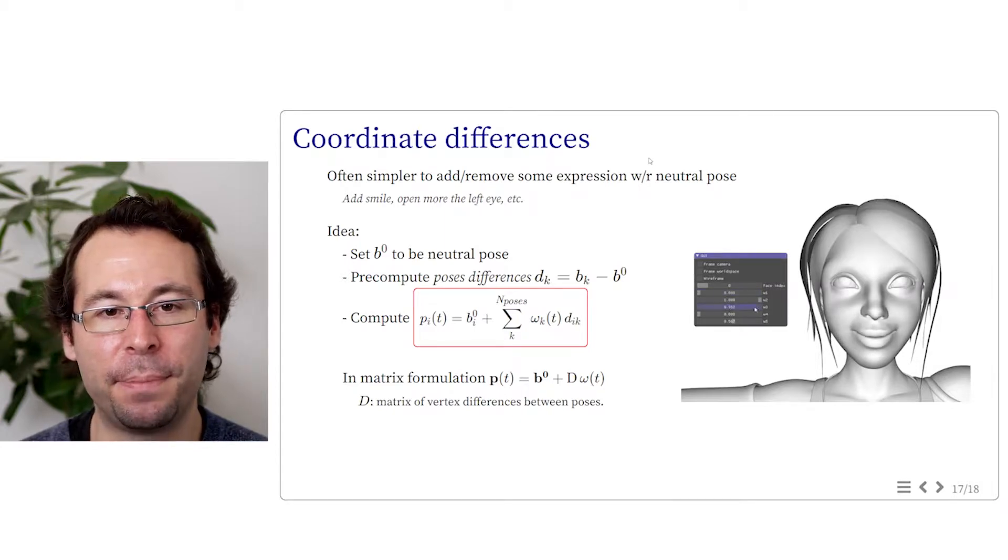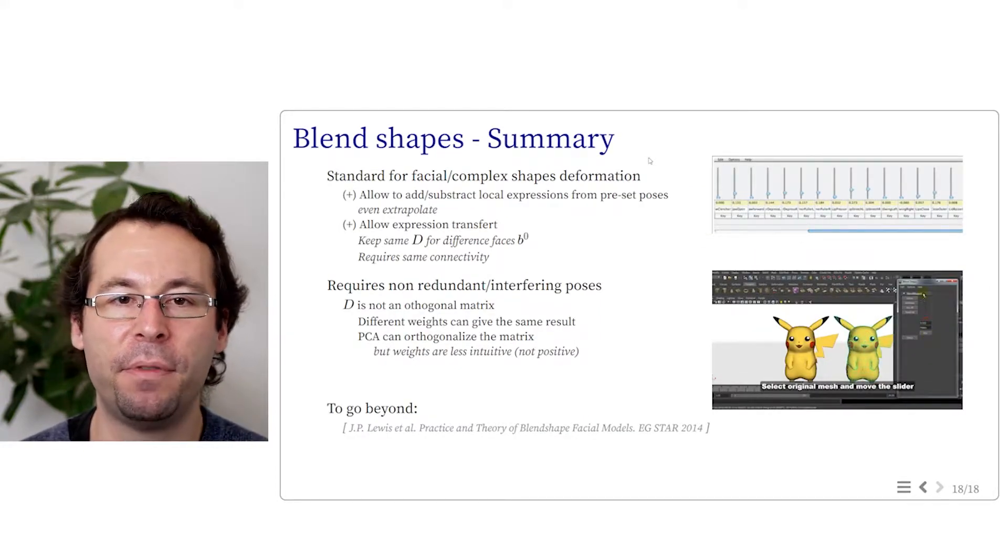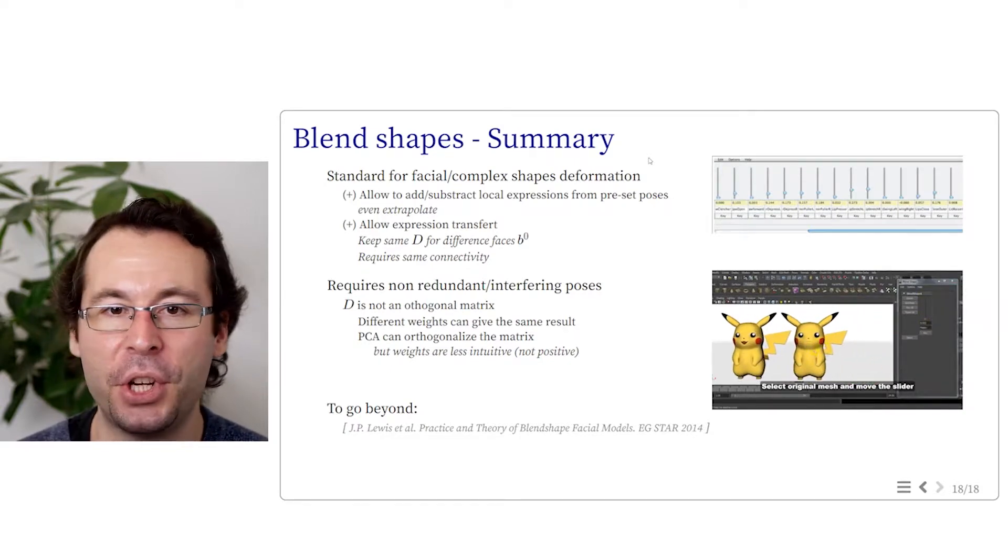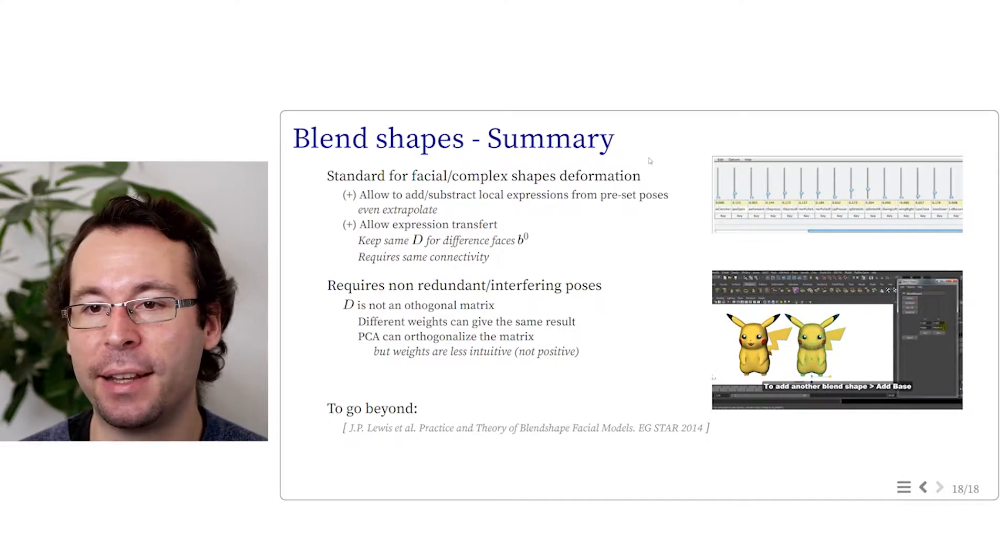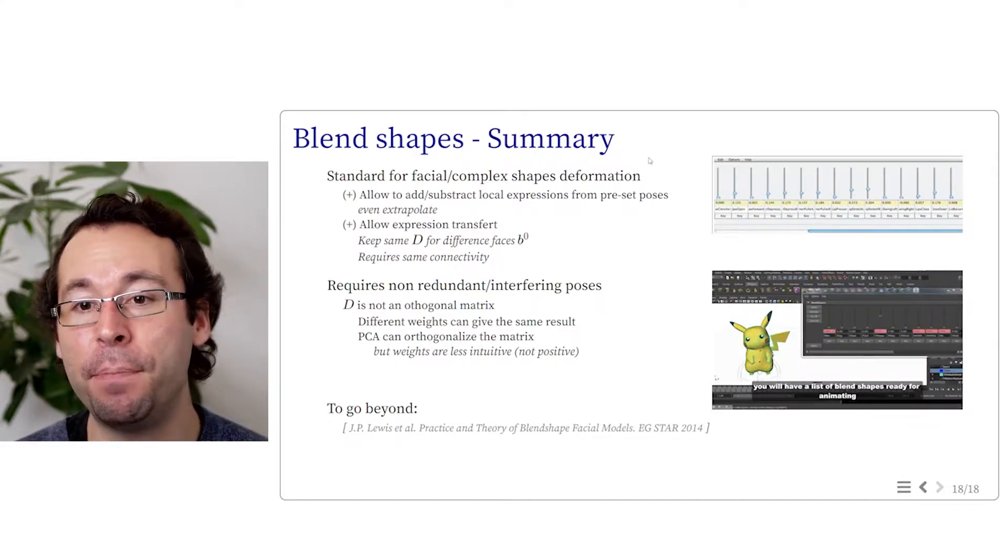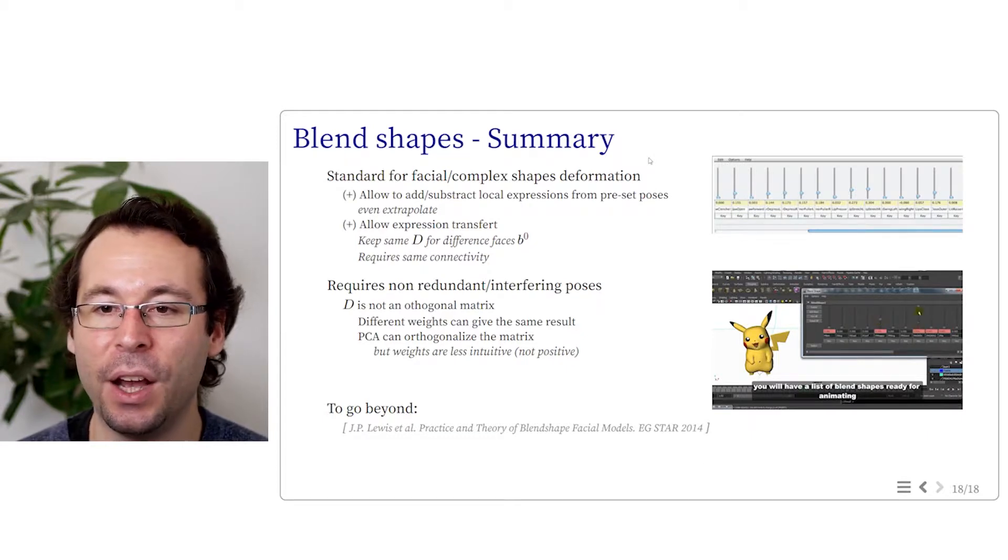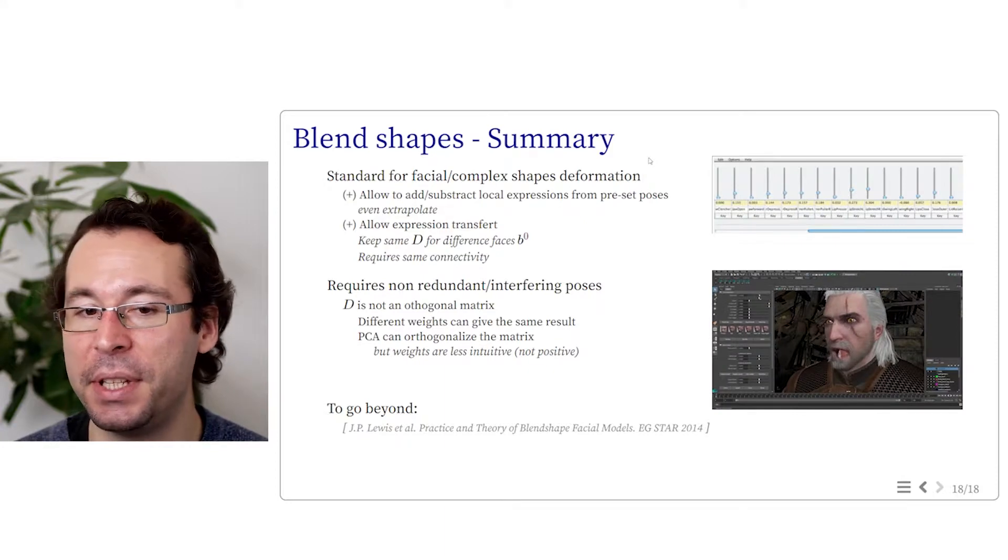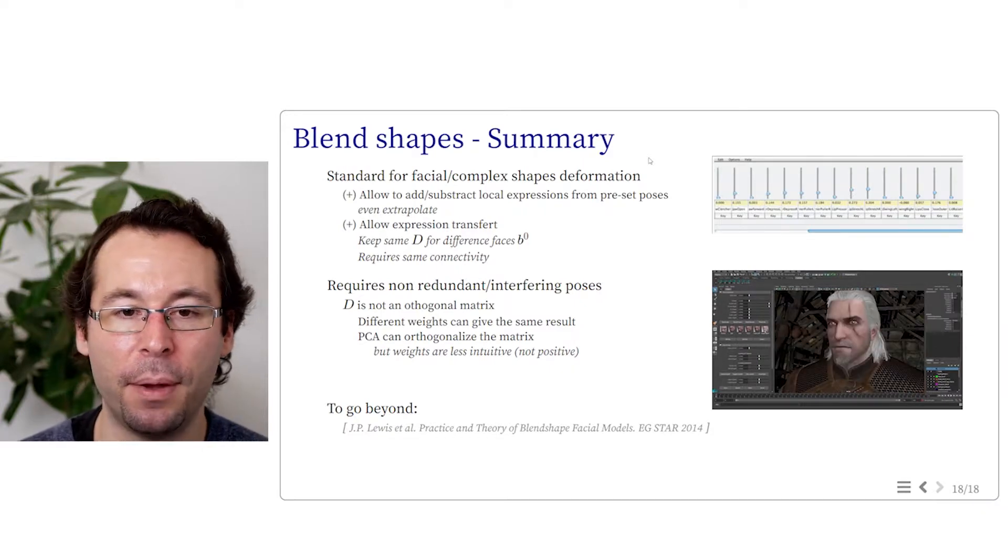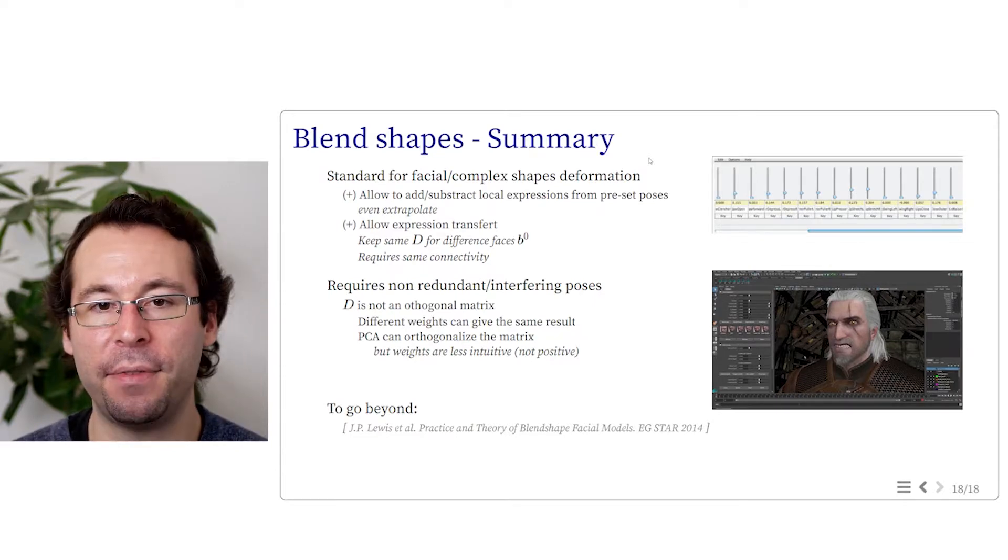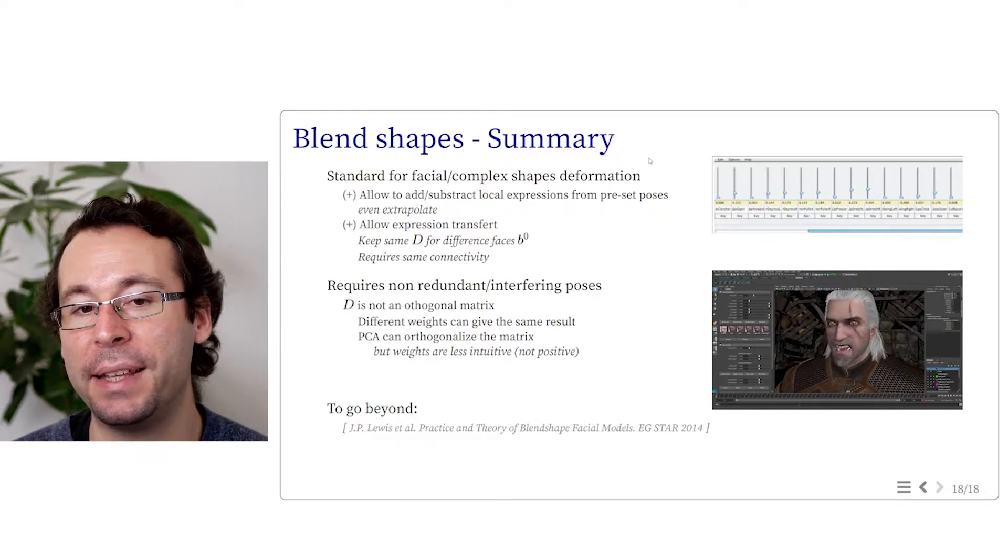We can note that this relation can also be expressed in matrix form, with this time a tall matrix of position difference d. As a summary with blend shape, this is the standard approach for modeling facial deformation and it can also be used to model general shape deformation. It allows to add or subtract local expression given by preset poses or even extrapolate these. It even allows expression transfer. Once we have encoded the vertex difference d.i.k, we can apply it to another face that share the same connectivity. This is used often in video games, where there is several characters with different face geometry and texture, but similar mesh structure.